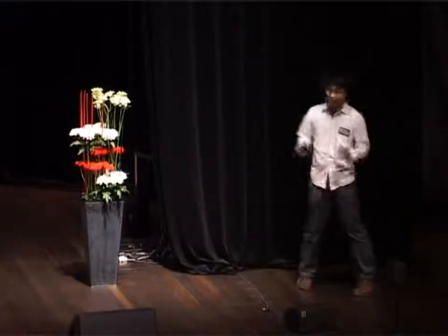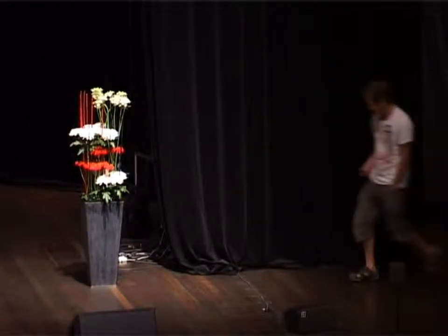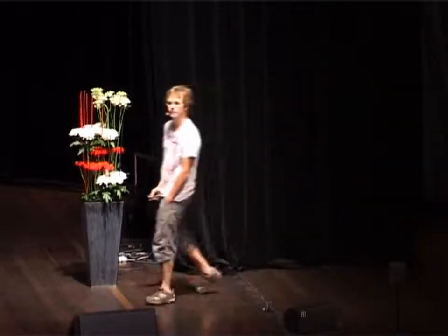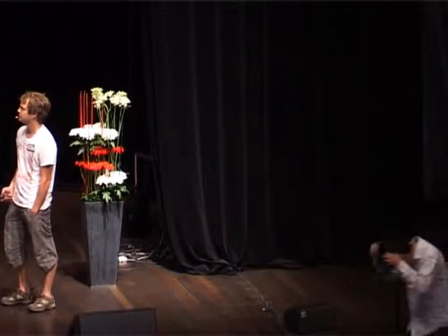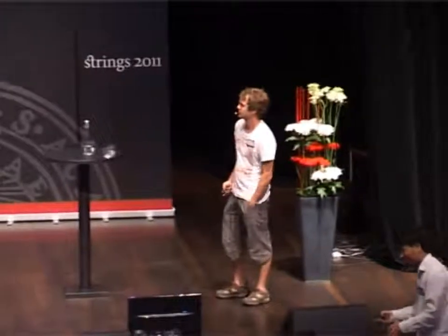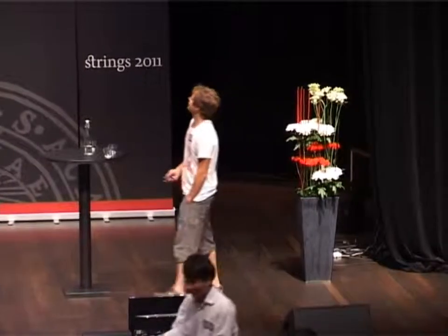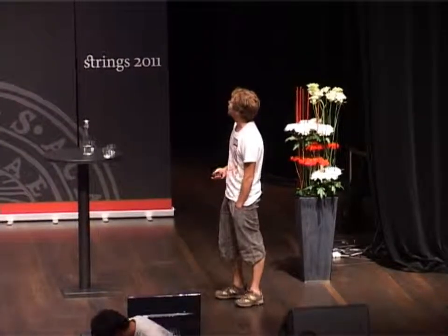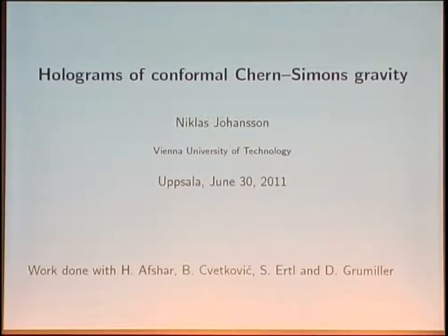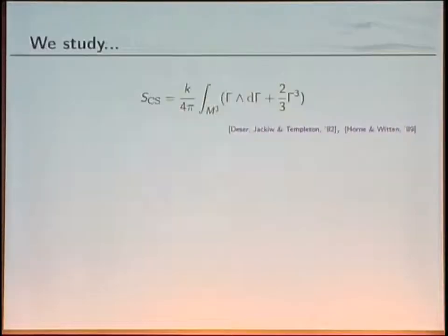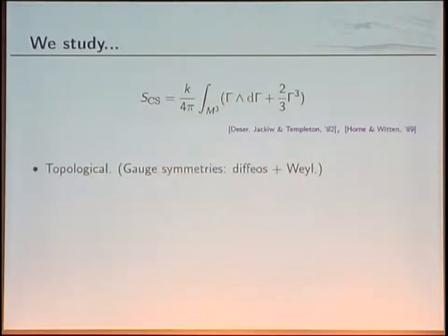Our next speaker is Nicholas Johansson from Vienna, with a talk on 'Holograms of Conformal Chern-Simons Gravity.' This is work appearing soon with Hamid Afshar, Branislav Svetkovic, Sabina Ertel, and Daniel Grumiller. We study a particularly simple three-dimensional theory of gravity consisting only of the gravitational Chern-Simons term in terms of the Levi-Civita connection. This theory is completely topological — no local degrees of freedom — with two kinds of gauge symmetries: diffeomorphisms and local Weyl invariance. Non-trivial dynamics appear when a boundary is introduced.